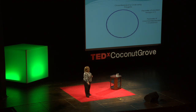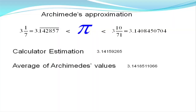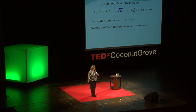He inscribes and circumscribes 96-sided polygons and comes up with a couple of numbers. The numbers he actually comes up with are 3 and 1/7, and 3 and 10/71. And the number we know and love today, pi, does fit in between. If students use their calculator they would get that value for pi, and the average of Archimedes' two numbers is almost the same thing. Pretty darn good.